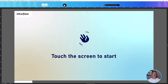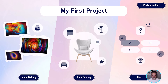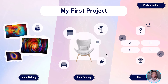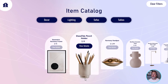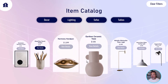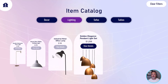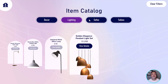Inside Composer is Player — we embedded it inside Composer, so if you test your work, we're using the same technology you would use in a deployment environment. Let me click Play Mode and start up this experience. Here we have our experience — touch the screen to start. I'm using my PC with a mouse as a finger. We have Image Gallery, Item Catalog, and Quiz. Let's open up the Item Catalog. It's a catalog of items — we're very creative at Intuiface with how we name things. We have this Item Catalog with an array of items we can browse, a filter option, and a View Details button for each item.